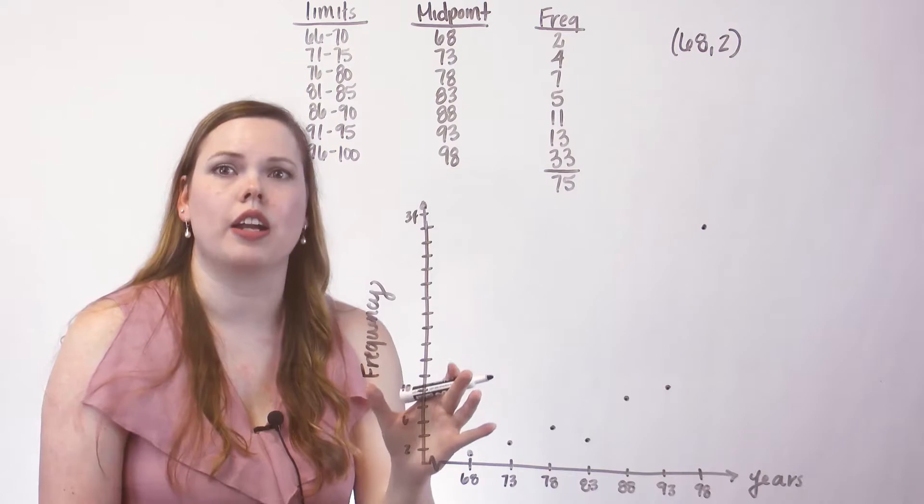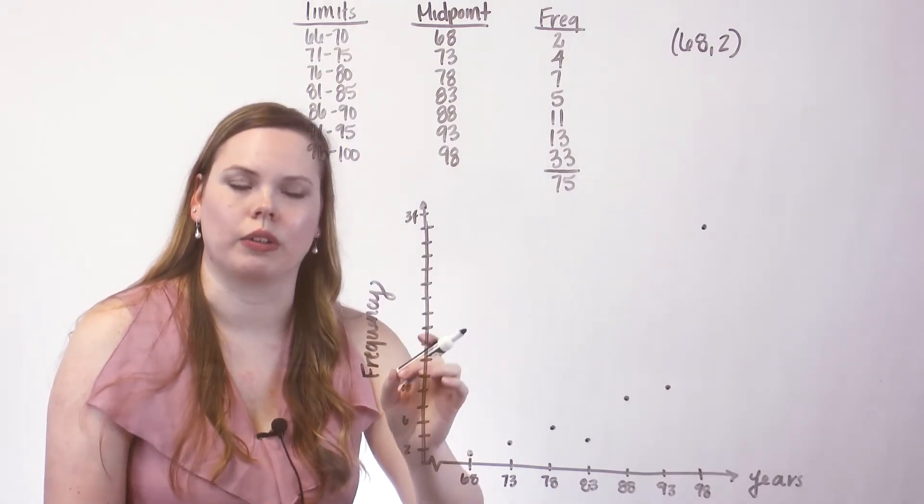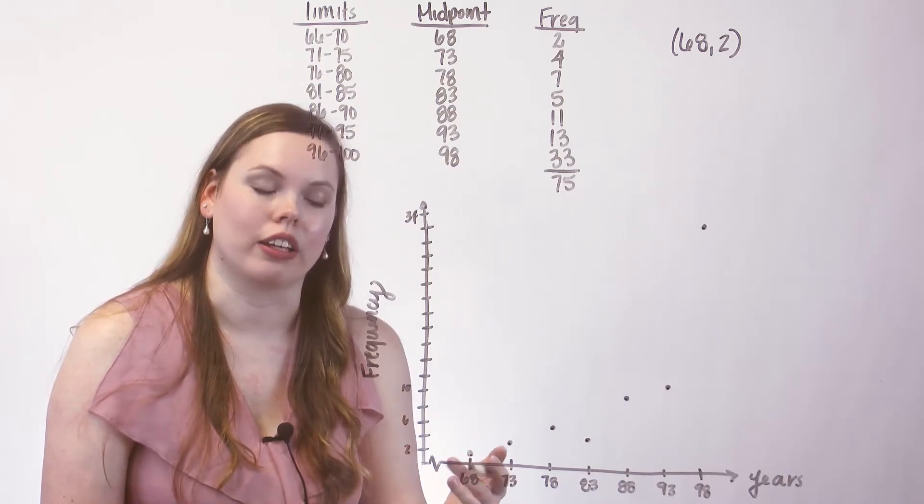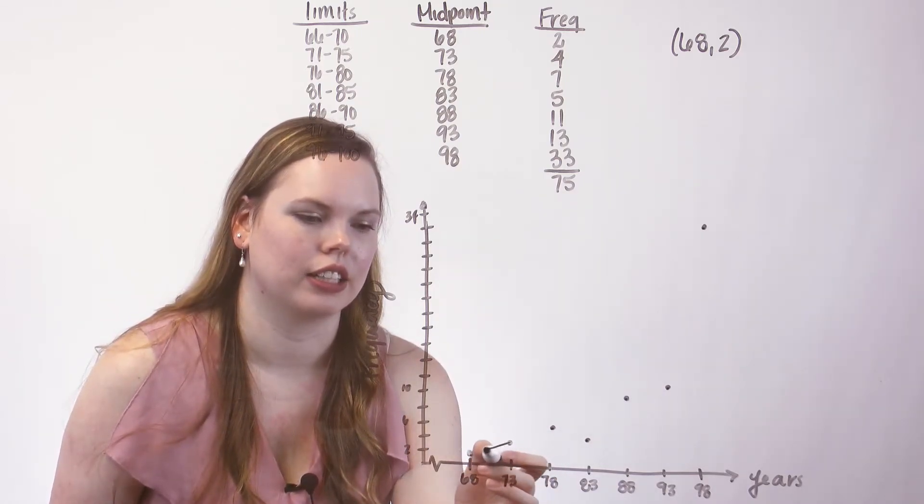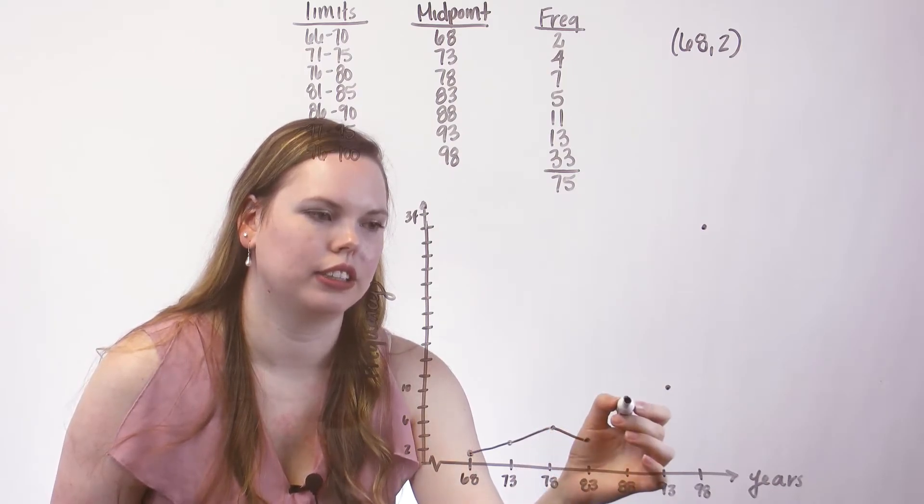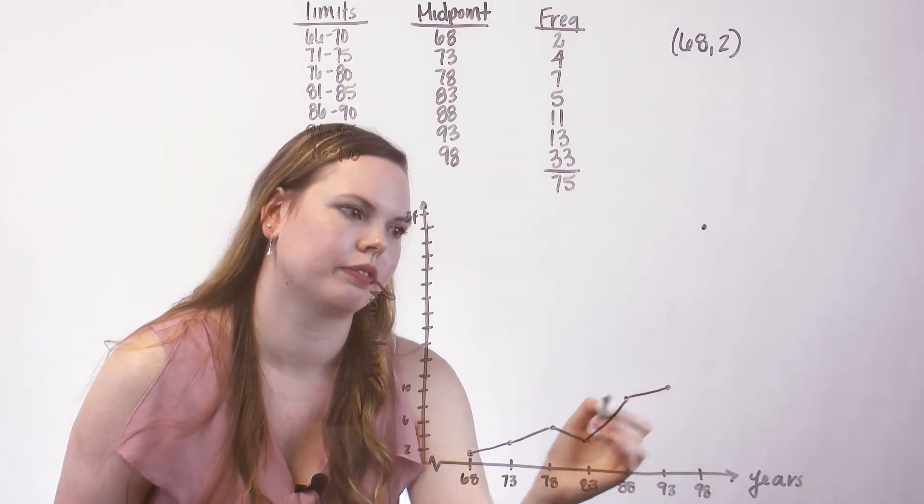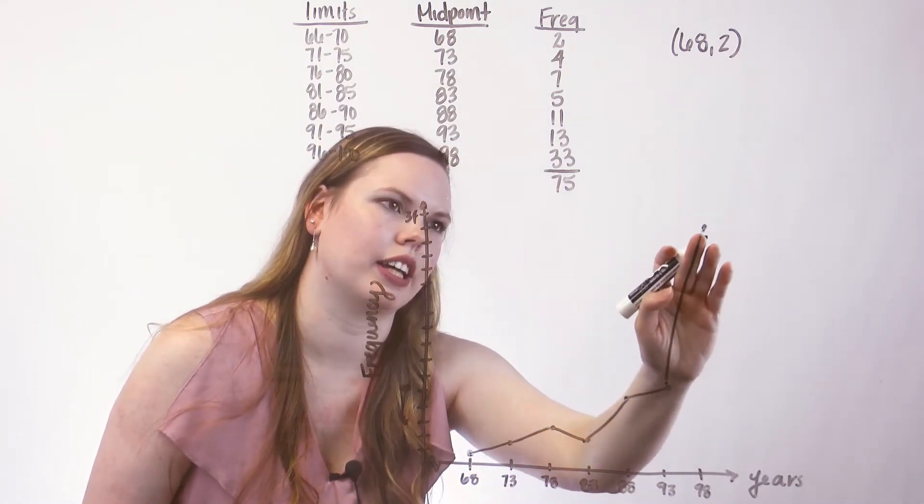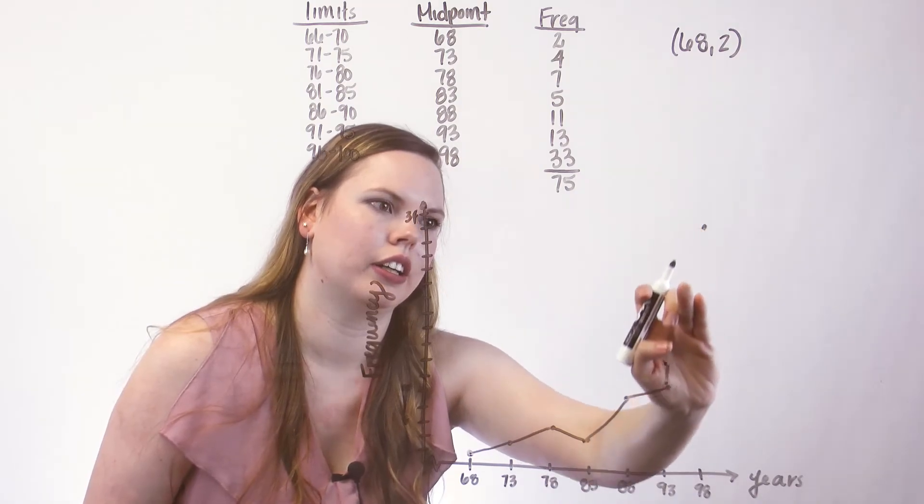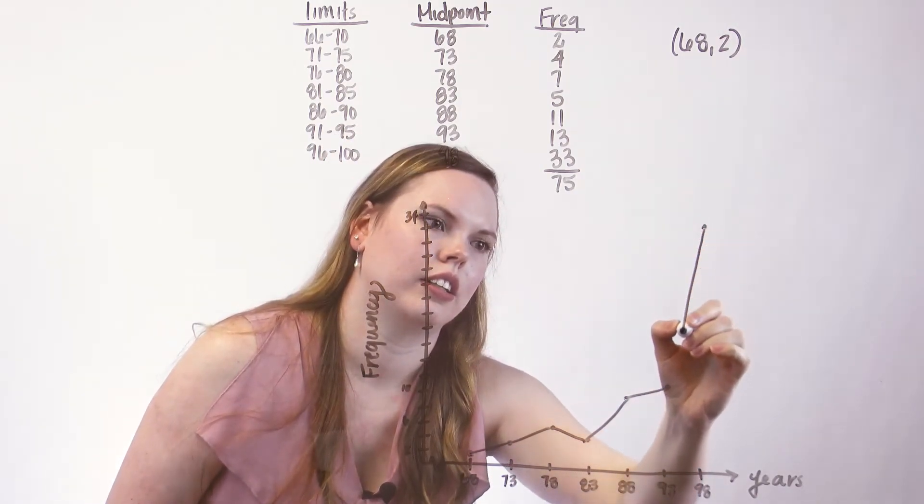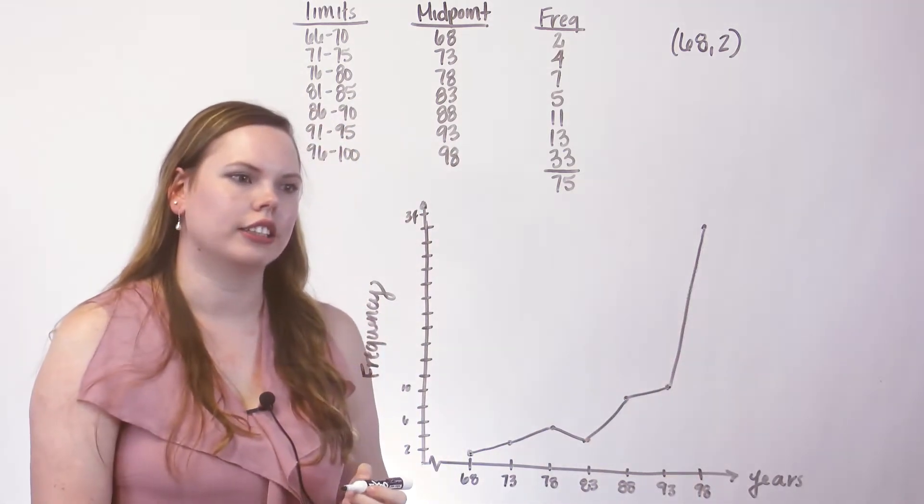So here's the scatter plot of the midpoint and the frequency. And then we want to connect the dots and start forming a polygon. So I'm going to connect. Polygon is a closed segmented figure. So there's all the dots connected. Get that one a little straighter. So there's all the dots connected.